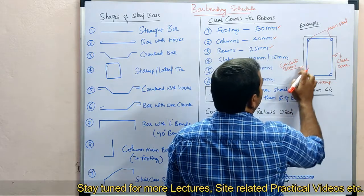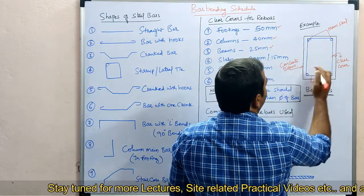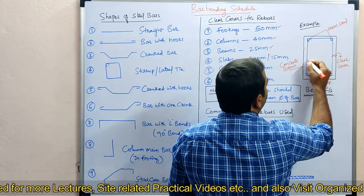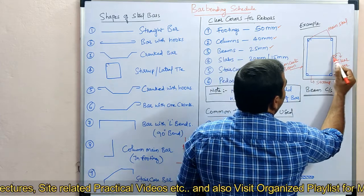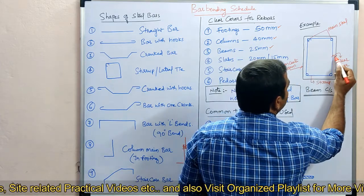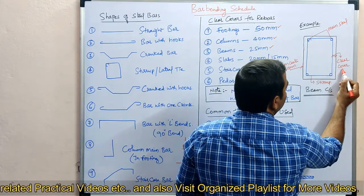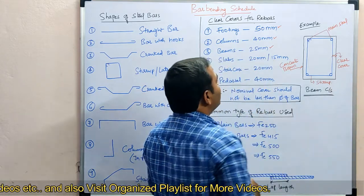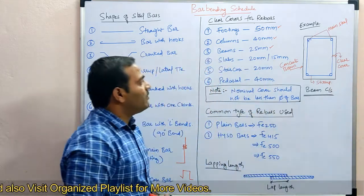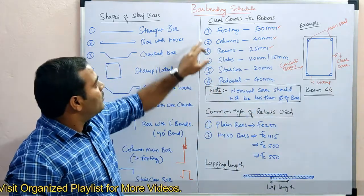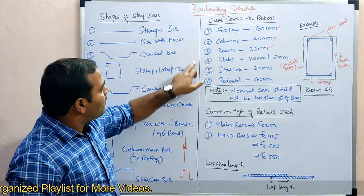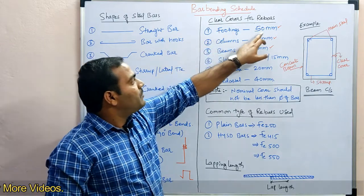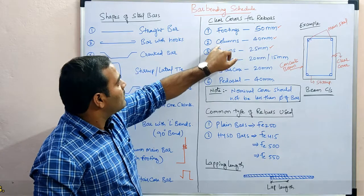For example, if you take a beam — this is the beam outline. You can see this is the concrete face of the beam, and this is the stirrup we provide. The gap between these two is called the clear cover. For different elements, we provide different clear covers. For footings, we provide 50 mm clear cover.